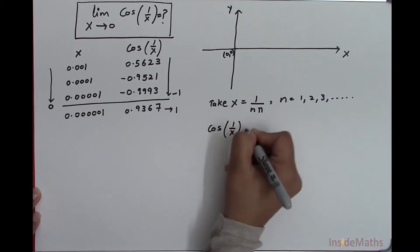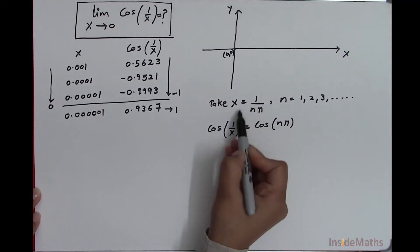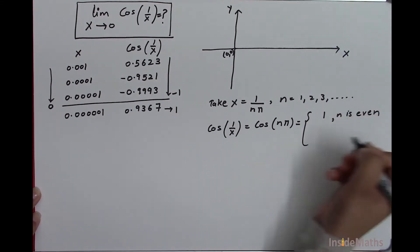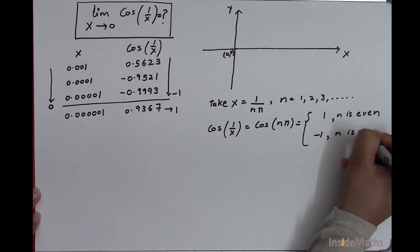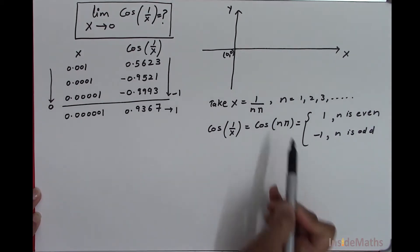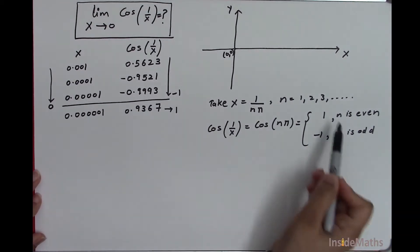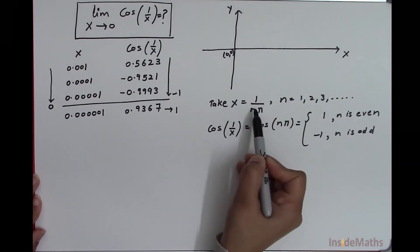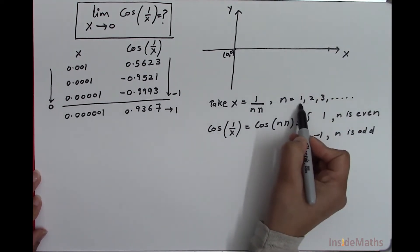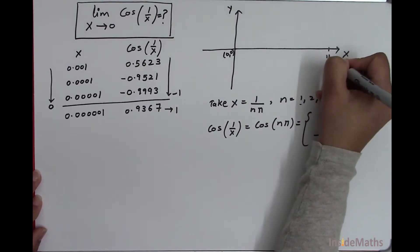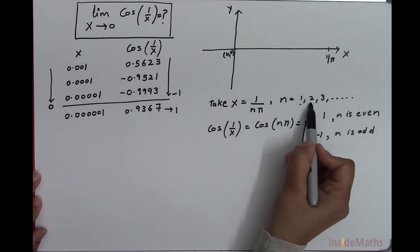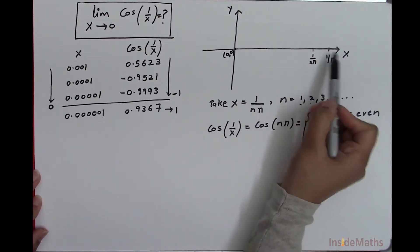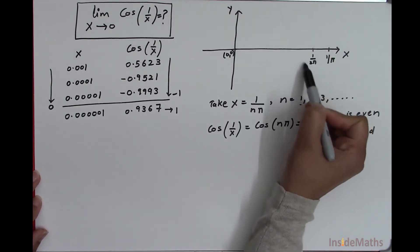So cos of 1 by x becomes cos of n*pi by this substitution. This equals positive 1 when n is even and negative 1 when n is odd. I did this substitution so that I can make this graph easily. Now I will plot these values of x on this axis. When n is 1, x is 1 by pi. When n is 2, x is 1 by 2 pi. This value will be to the left as the denominator is getting bigger, making the whole fraction smaller.